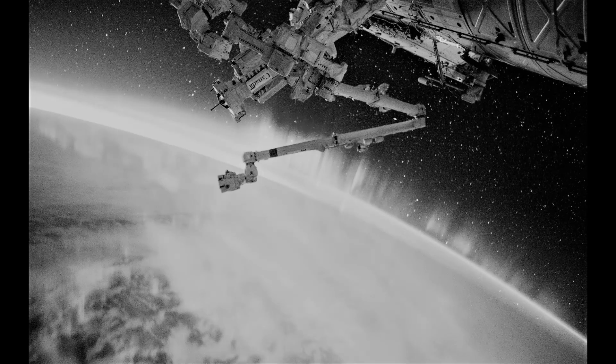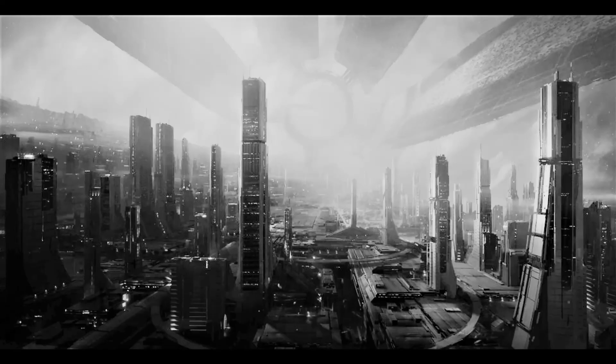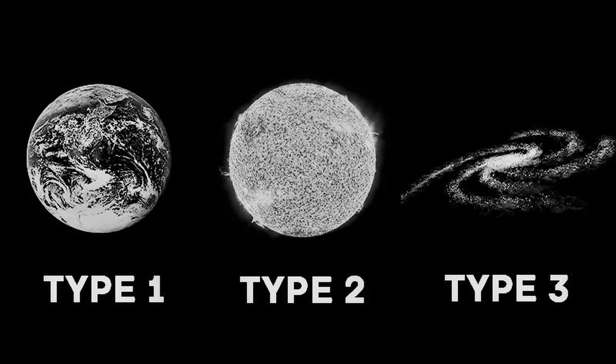In 1964, Russian astrophysicist Nikolai Kardashev designed the Kardashev scale. At the time, he was looking for signs of extraterrestrial life within cosmic signals. The scale has three categories, which are based on the amount of usable energy a civilization has at its disposal and the degree of space colonization. Generally, a type 1 civilization has achieved mastery of its home planet, a type 2 civilization has mastery over its solar system, and a type 3 civilization has mastery over its galaxy.